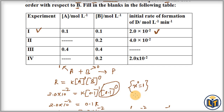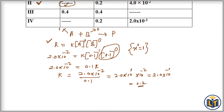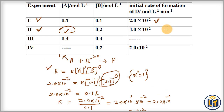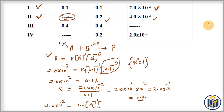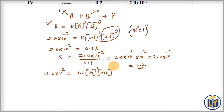Now we move to the second experimental data, where the concentration of reactant A is unknown. We use the rate law expression, plugging in the known values. K is now known (0.2), so A is the only unknown. For experiment 2: 4.0 × 10⁻² = 0.2 × [A]^1 × [0.2]^0. The [B]^0 term becomes 1, so we can solve for A by transferring 0.2 to the left side.